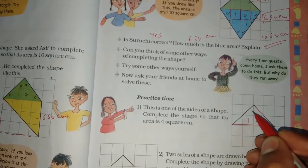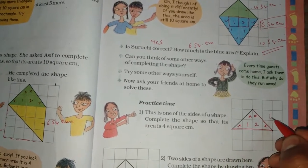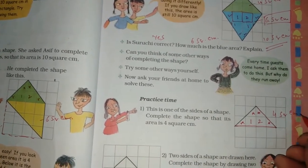We will make it bigger. That is 1, 2, 3, and this is 4 square cm. It's clear.